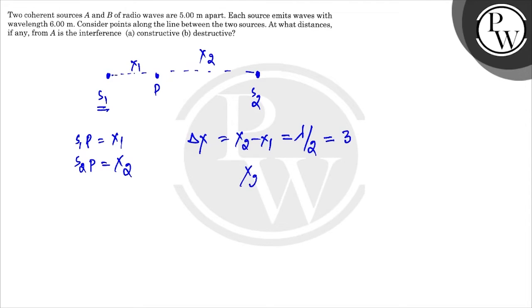So x2 minus x1 is 3 meters. But it's already given that x2 plus x1 is also equal to 5 meters, the distance between the two sources. If we add them, 2x2 equals 8, so x2 equals 4.